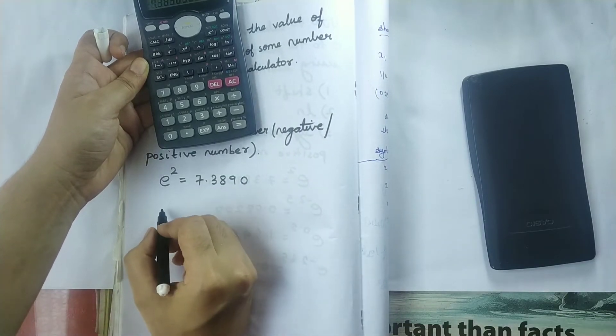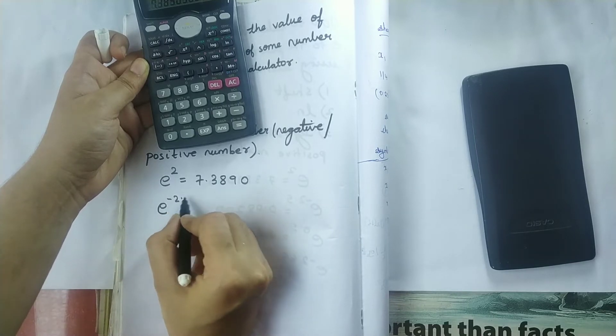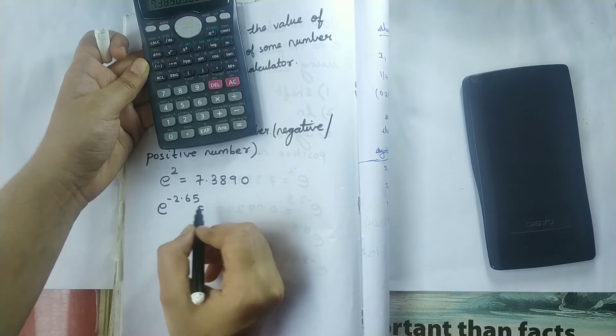Now for example, if I want to find the value of e to the power of minus 2.65, so this is a negative number.